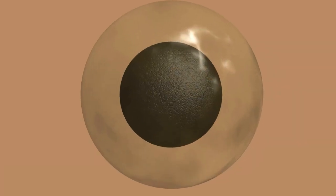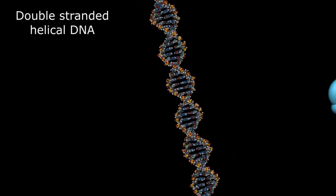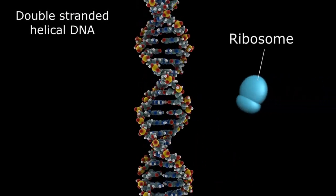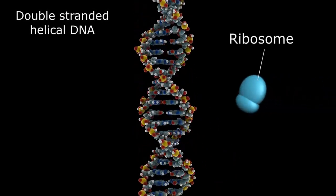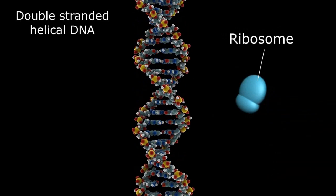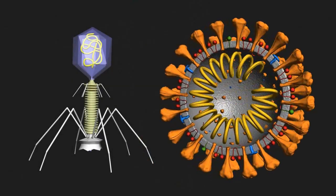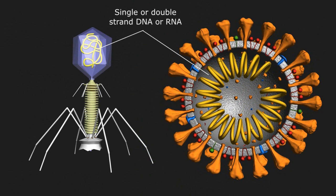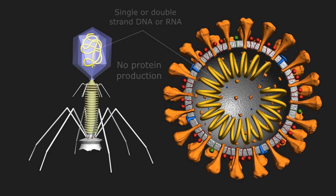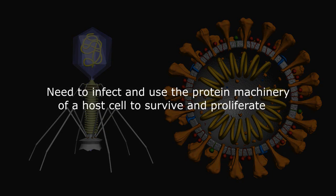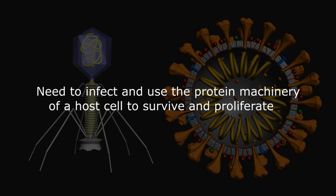All our cells contain a double helix strand of DNA and all the protein-making machinery like ribosomes to allow the cell to function and reproduce. Viruses contain a single or double strand of either DNA or RNA, but have none of the protein-making capabilities and therefore cannot reproduce on their own. They have to infect and utilize our cells to survive and proliferate.